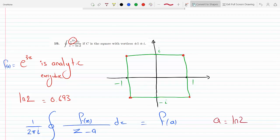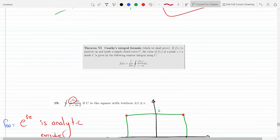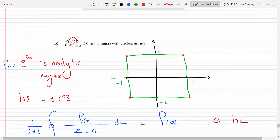In order to do that, as long as the function is analytic and as long as point a is contained inside C, which it is because 0.693 is contained within -1 to 1 and -i to i.